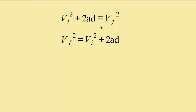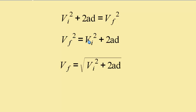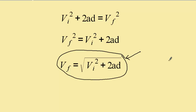Now I'm going to rearrange this: final velocity squared equals initial velocity squared plus 2ad — I simply swapped sides. To get rid of the square, I take a square root. So the final velocity equals the square root of initial velocity squared plus 2ad. There you have it — the last of our kinematic equations.